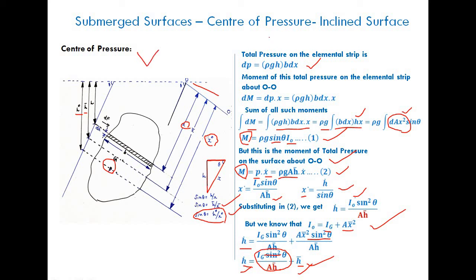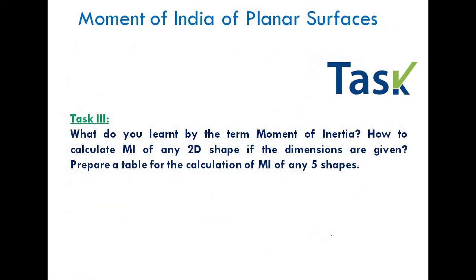This h-star equation h-star = h-bar + (Ig·sin²θ)/(A·h-bar) is general and applies to all plates — whether vertical, horizontal, or inclined — by substituting suitable values of theta. For a vertical plate, substitute θ = 90°; for a horizontal plate, substitute θ = 0°. This gives the corresponding specific equation for the center of pressure in each case.